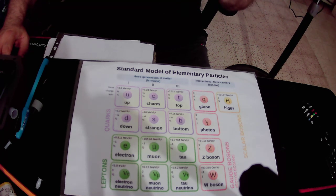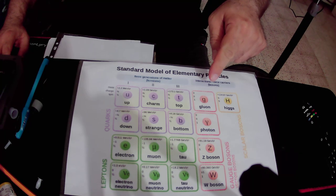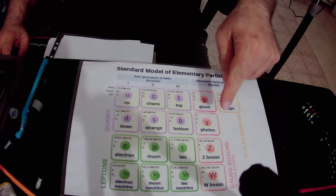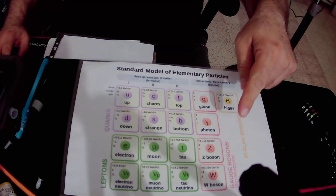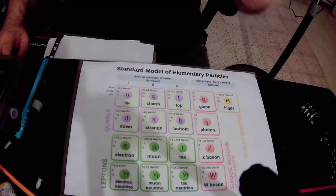In total in this table we have 12 elementary force particles: 8 types of gluons, one type of photon, one type of Z boson, and two types of W boson — so 12 elementary force particles in total.